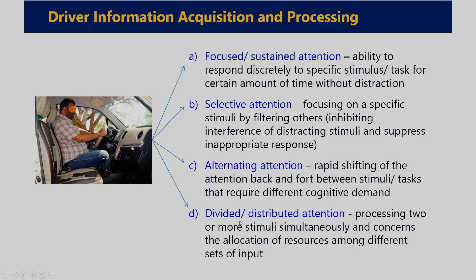There is another type — divided or distributed attention — where the driver performs two or more tasks simultaneously. Those tasks or stimuli may be of similar or different nature. For example, the driver is talking with a co-passenger, controlling different controls, and simultaneously receiving information from the road. For a particular time, the driver distributes attention among so many activities. This type of attention distribution is called distributed attention.